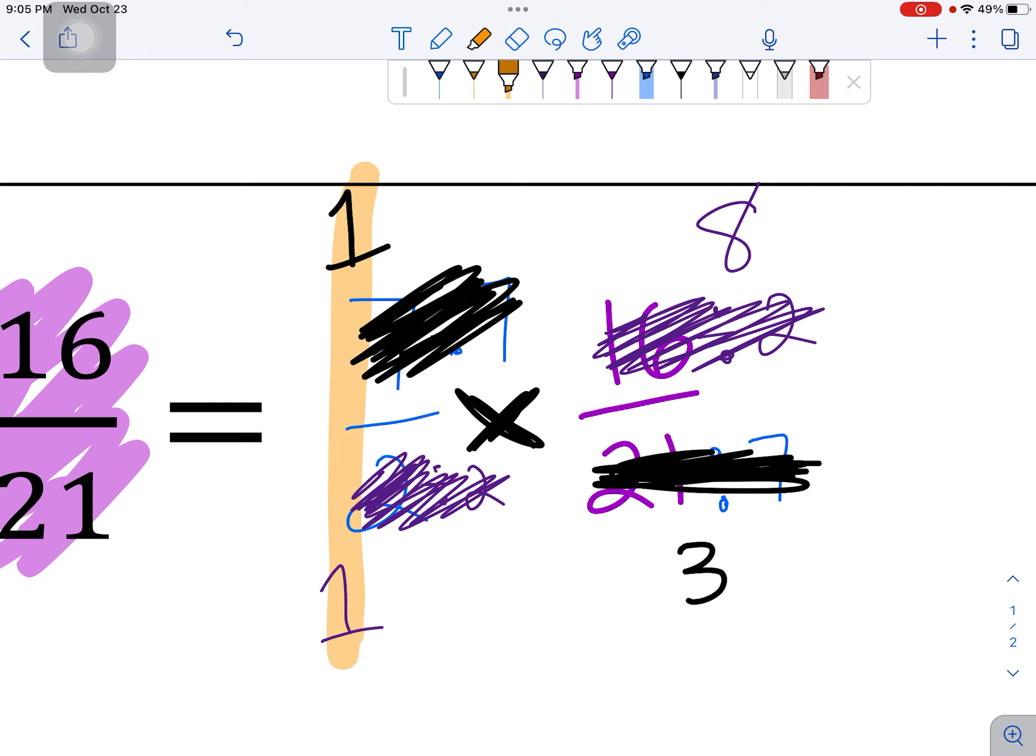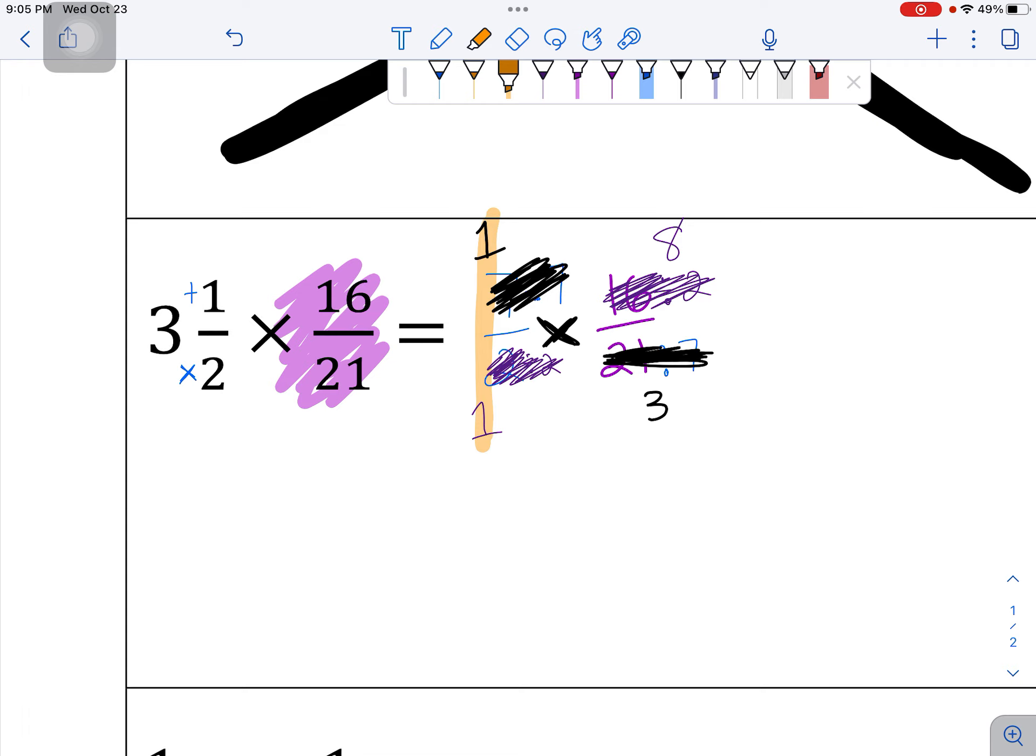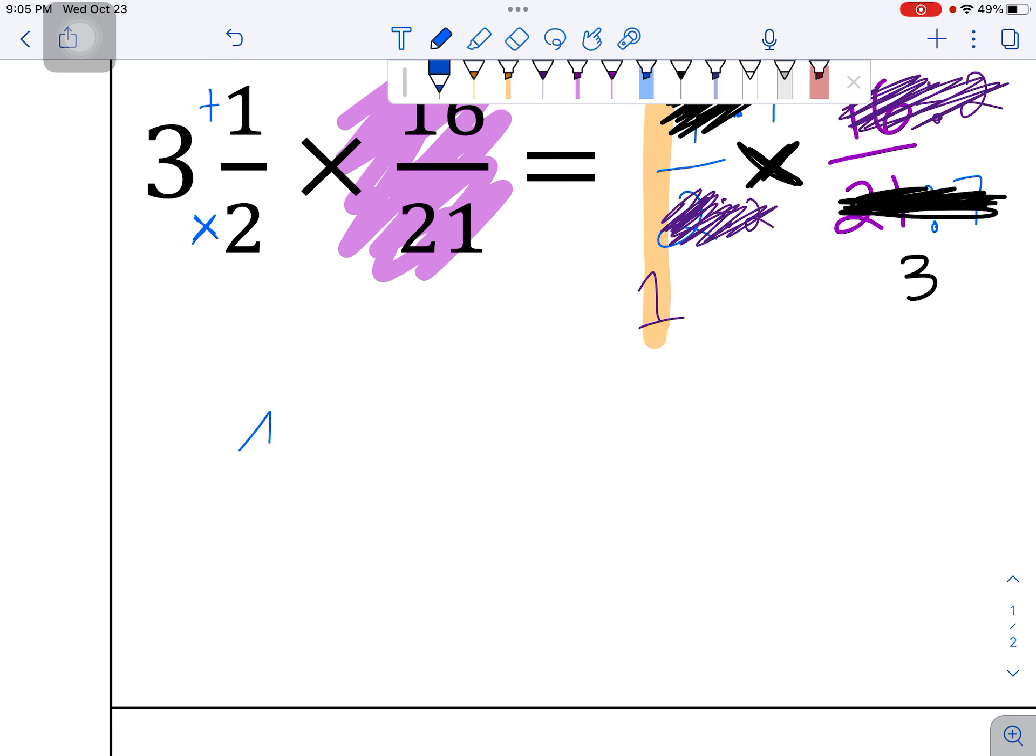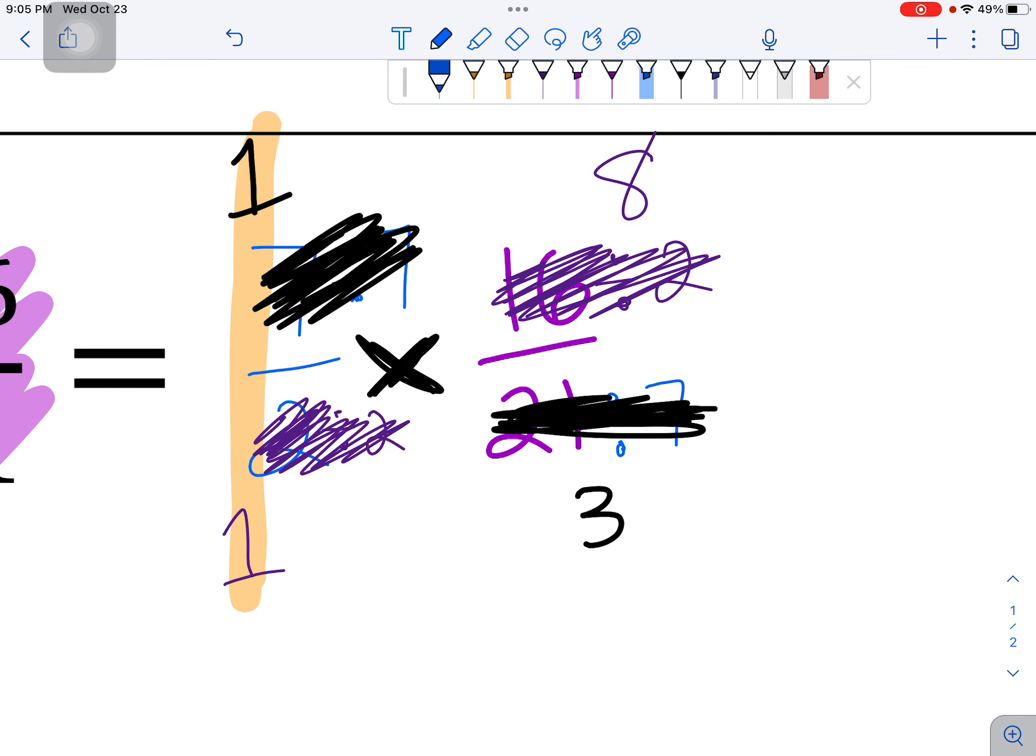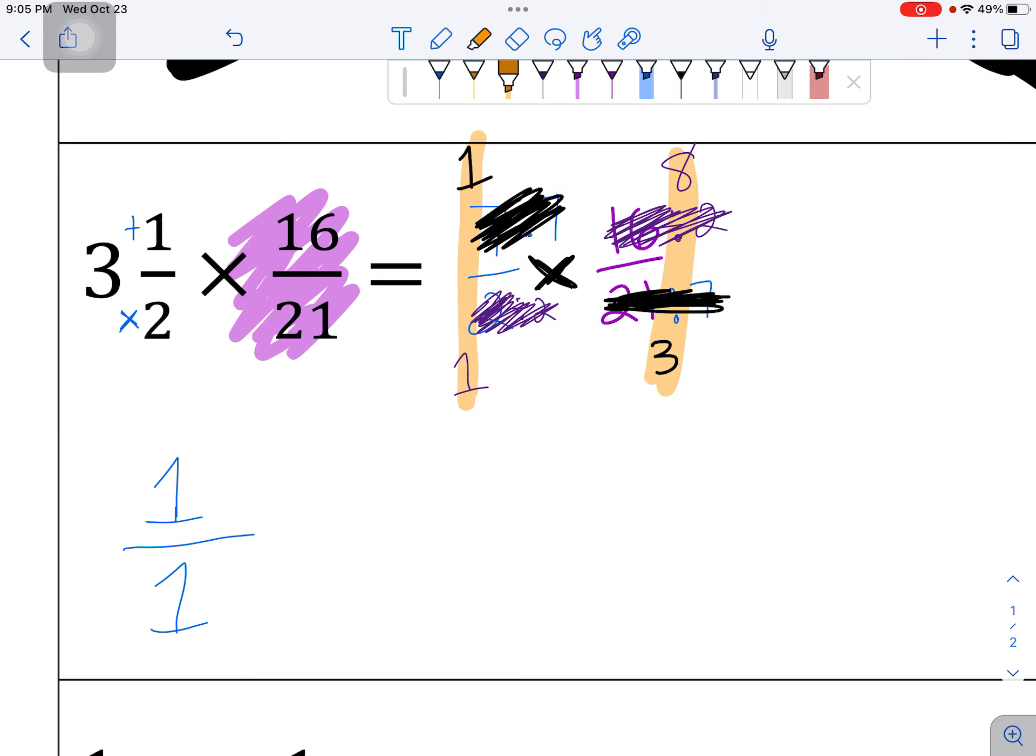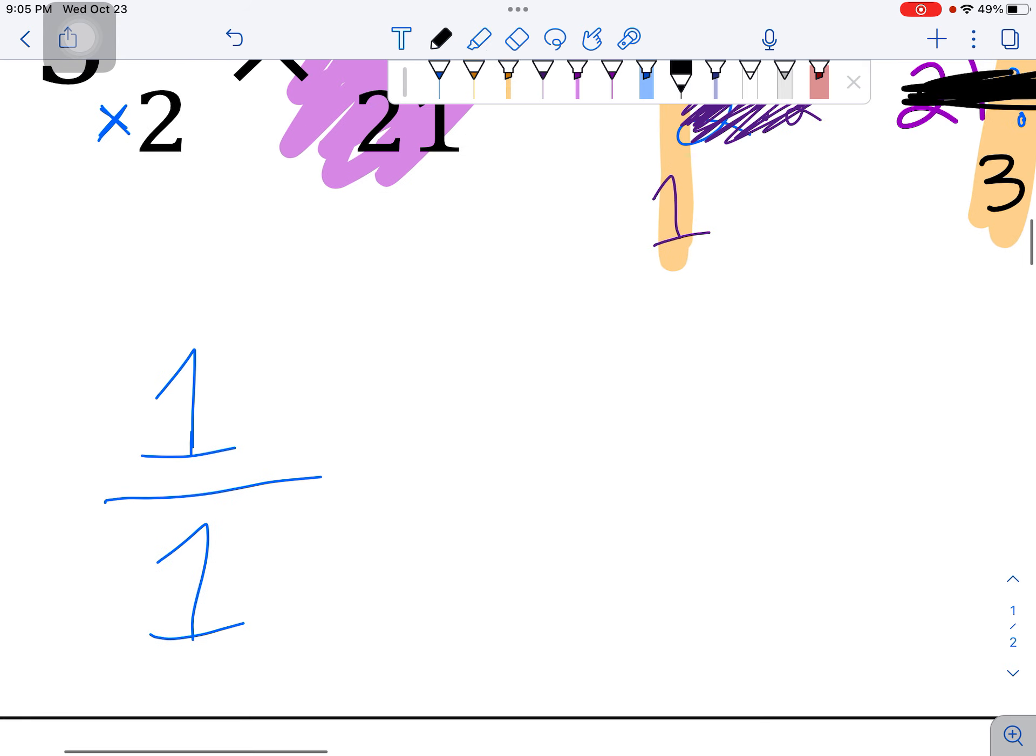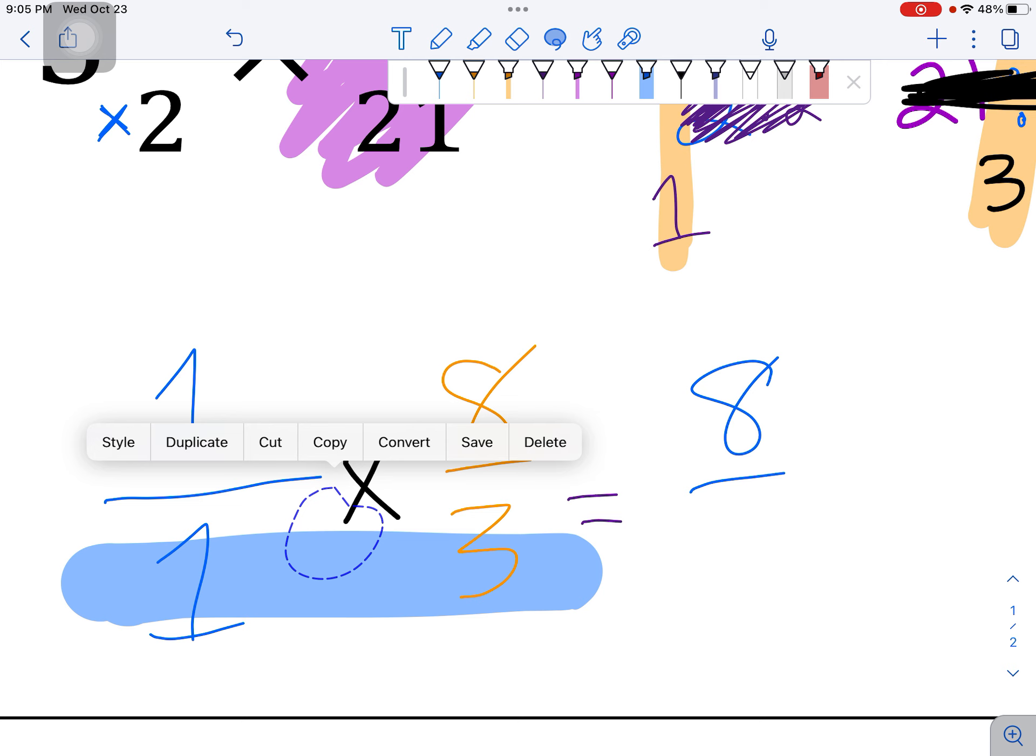The first fraction is now a 1 on top of 1. Let's rewrite that. 1 on top of 1. The second fraction is 8 on top of 3. That's 8 thirds. So we'll times, times, 8 thirds. This is a lot easier times problem. It's so much easier. On the top, 1 times 8 is 8. And for the denominator, 1 times 3 is 3.